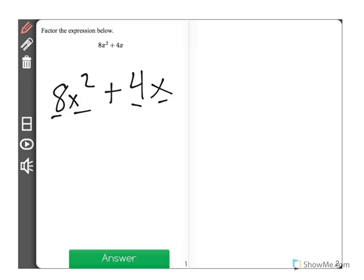So starting with the constants, what I'm going to do is write out all the factors of 8 and all the factors of 4.